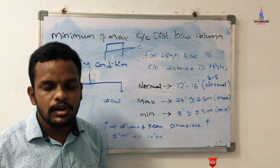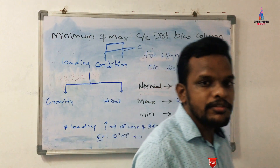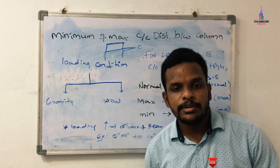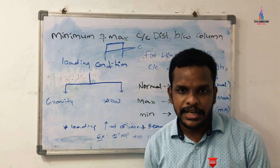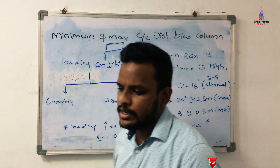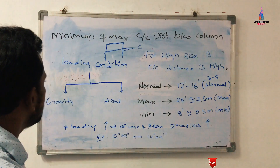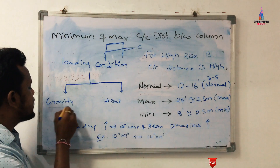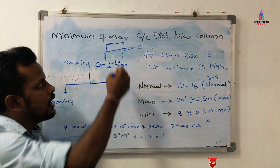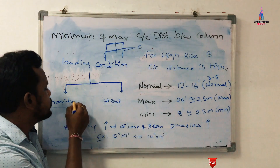The center-to-center distance between columns depends on the loading condition, which is one of the most important factors we consider before designing any kind of structure. For medium-rise, low-rise, or high-rise buildings, we consider load cases related to gravity loading as well as lateral loading. Loads acting in the vertical direction due to gravitational force are called gravity loads.